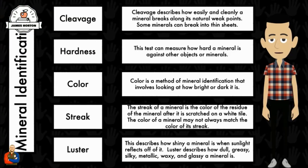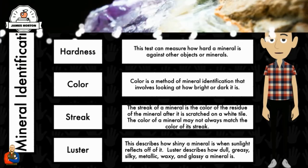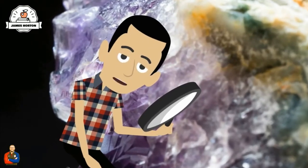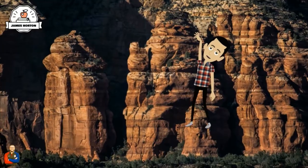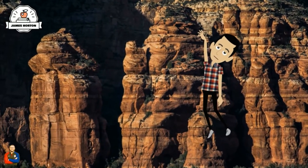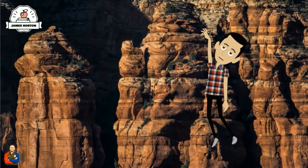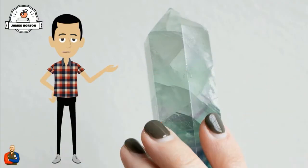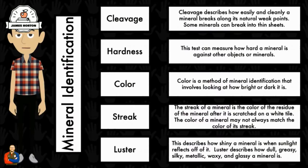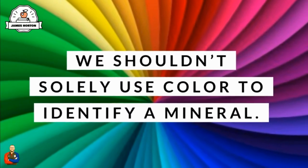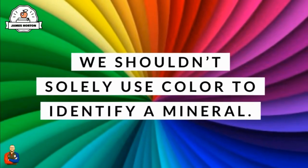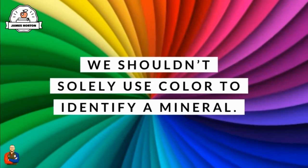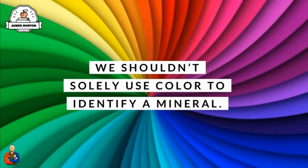We often find it easy to observe a mineral's color. Most minerals come in one shade or a very similar color to one another. However, some, like quartz, come in many different colors. Some minerals, like gold and pyrite, are the same exact color, except one is extremely valuable and one isn't. It's probably not best practice to solely use color as a property to identify a mineral.